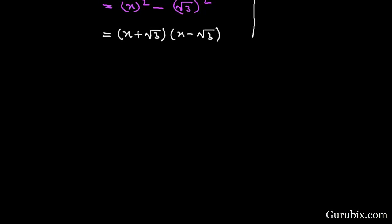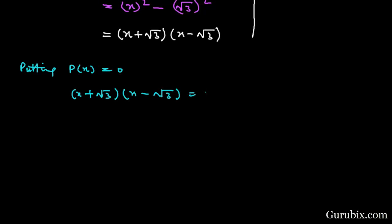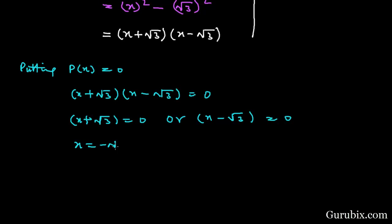Now we shall put the given polynomial p(x) equals 0. So putting p(x) = 0, this means x plus root 3 into x minus root 3 equals 0. This means x plus root 3 equals 0, giving x equals minus root 3, or x equals positive root 3.